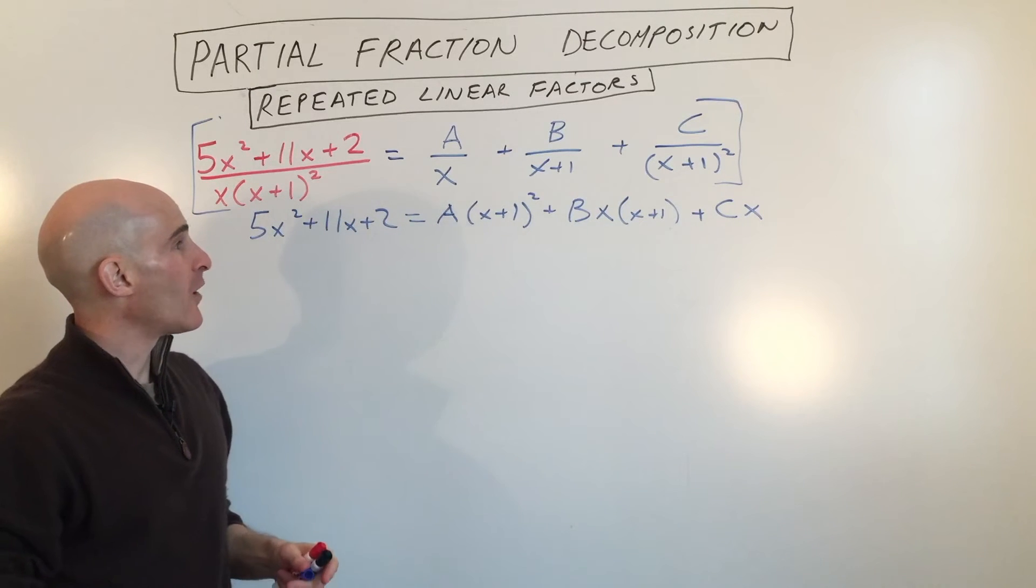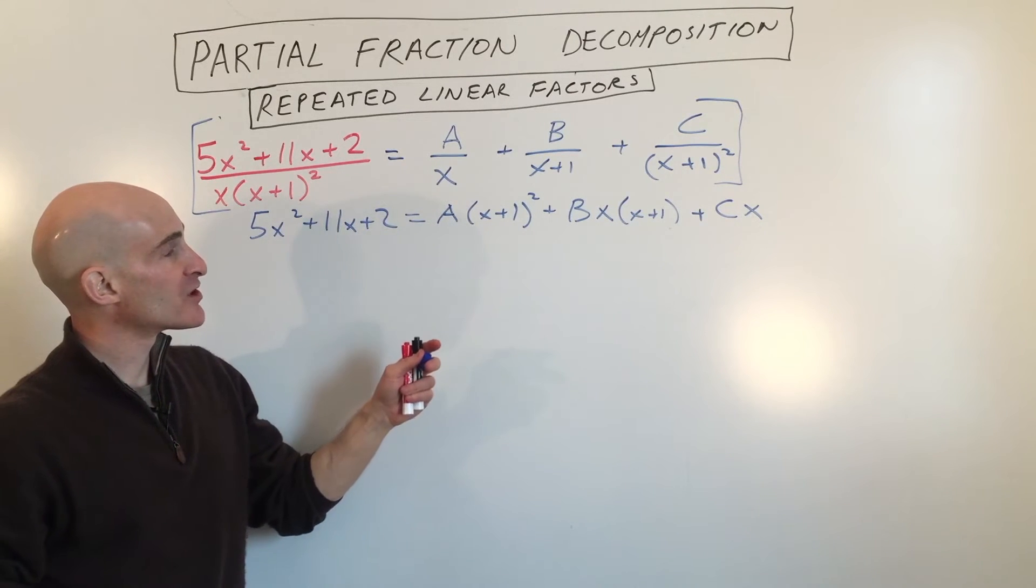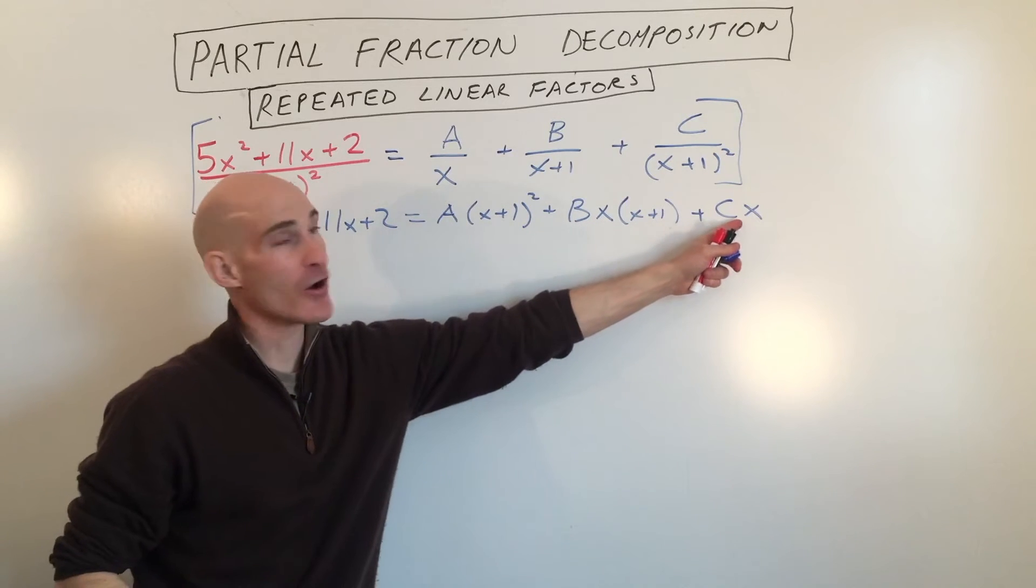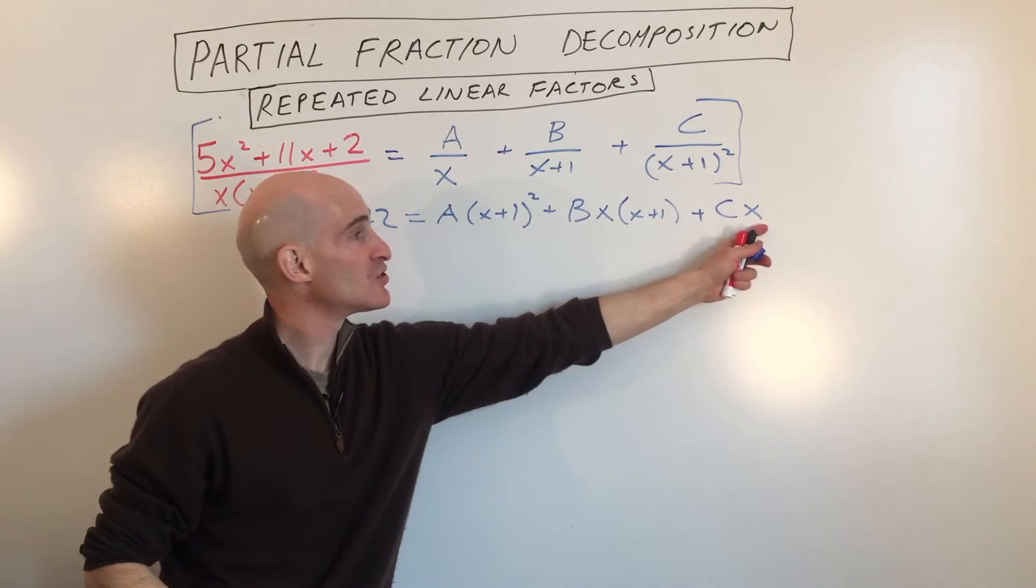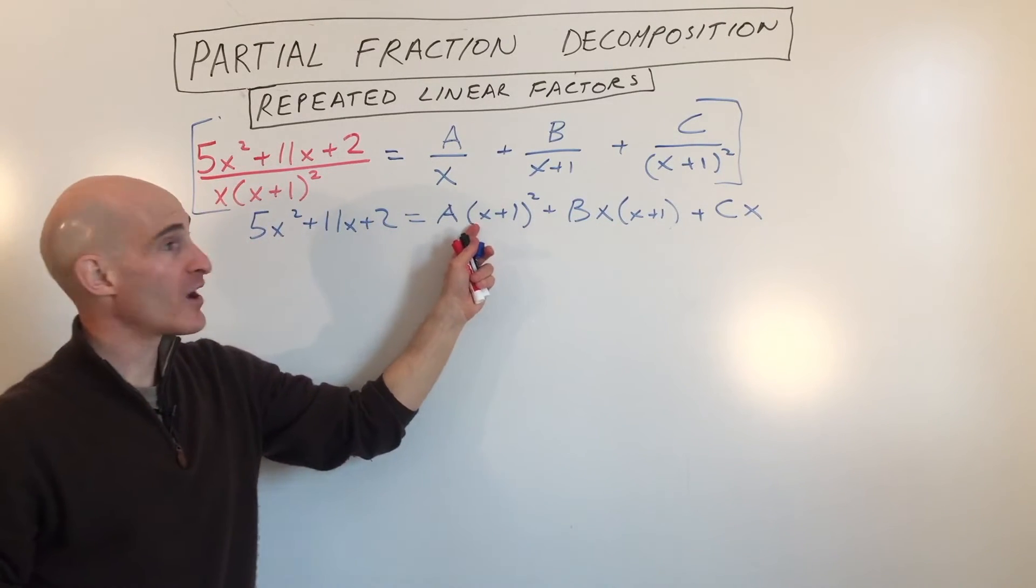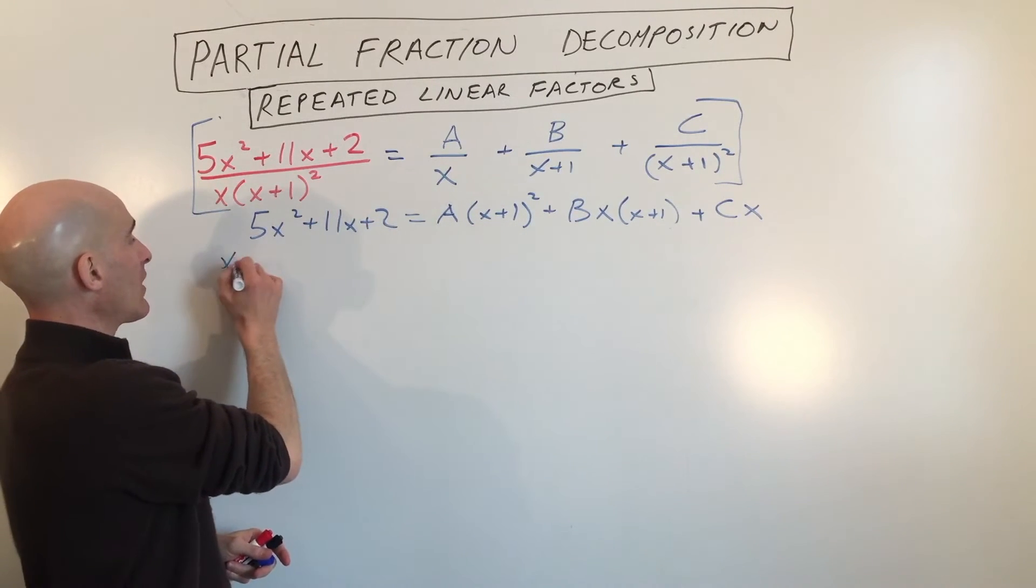Okay, so what do we need to do now? Well, we're going to be strategic, and we're going to say let's let x equals 0, because if we do that, 0 times anything is 0. That's going to cancel out these two groups, and we can solve for A. So let's let x equals 0, x equals 0.